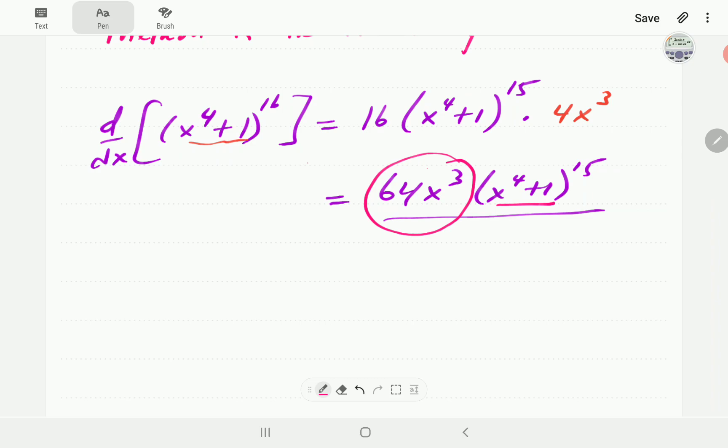So, the important thing that we want to take away from this is the relationship between this term and this term. Notice that this term we got from the derivative of the inner term times a constant. So, this term is a constant, this term is a constant multiple of the derivative of this one here.